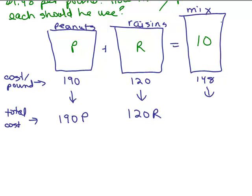And in the mixture, how much should that cost? Well, it's 148 cents per pound, and I've got 10 pounds. So it's 148 cents for every pound times 10.